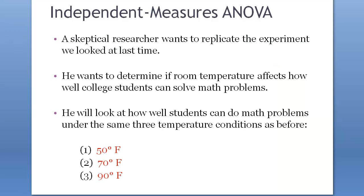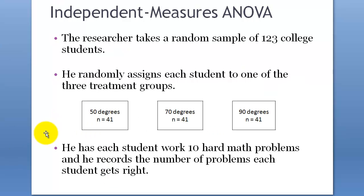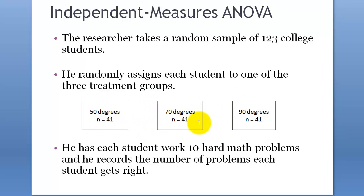Going back to the previous example, we found that there was some difference among the three groups. We just didn't know where the difference was. There could be three differences — all these pairs could be different, or there could be only one difference. Maybe these two groups could be different, or these two, or these two. We just didn't know where. That's why we wanted to do a post-hoc test.